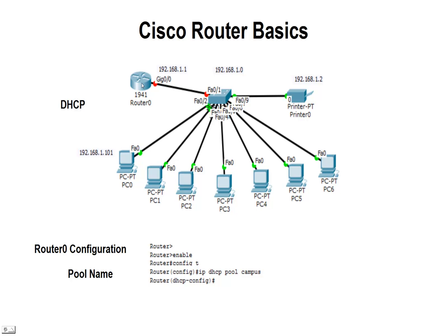The first thing we need to do is come up to our 1941 router and connect to it, either through a console cable or directly, and use the command line interface for configuration. We need to assign a pool name to our DHCP. When you first turn on your router, you'll get a prompt with just a carrot or arrow sign. Type in 'enable' — it turns that to a pound sign. Then type 'configure terminal', or 'config t' for short, and you'll be in configuration mode. Now type 'ip dhcp pool' followed by the name of your pool — the name I'm using is 'campus'. We type that in and now we're in the DHCP configuration.